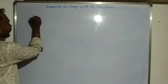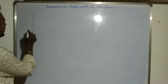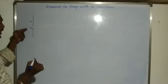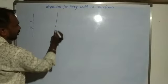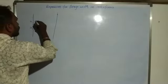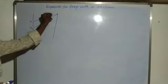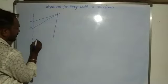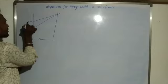We consider two slits, S1 and S2, and a screen. The distance between the slits and the screen we consider as capital D, and the distance between the two slits we consider as small d.